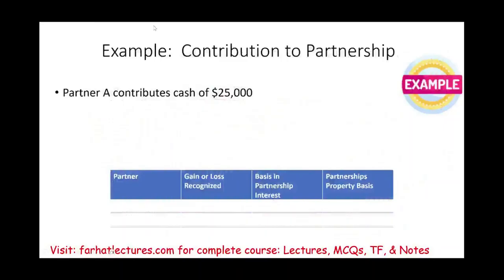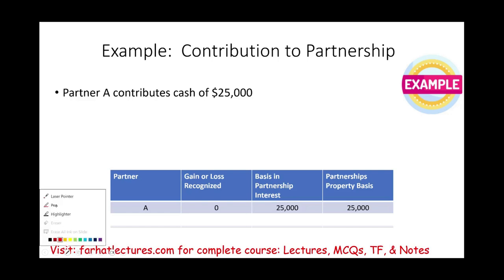Partner A contributed cash of $25,000. Do we have a gain or a loss for Partner A? If you contributed cash, cash is cash — it doesn't have a higher or lower fair value than its face value. Therefore, there's no gain, no loss. The basis in the partnership interest is $25,000 — that's your basis in the partnership interest. And the $25,000 sitting in the bank account represents $25,000 property basis in the partnership.